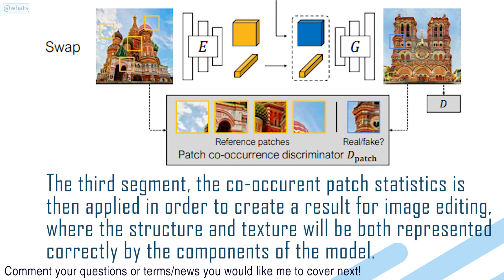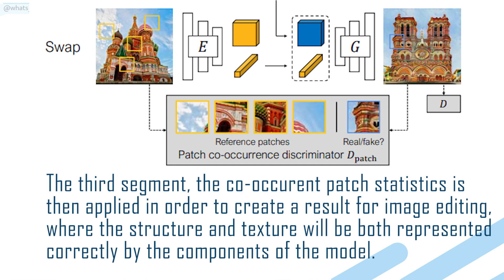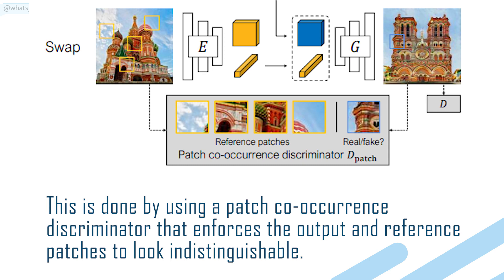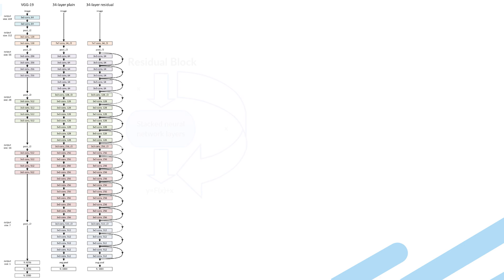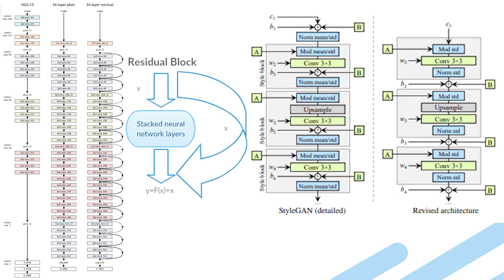The third component, the co-occurrence patch statistics, is then applied in order to create a result for image editing, where the structure and texture will both be represented correctly by the components of the model. This is done by using a patch co-occurrence discriminator that enforces the output and reference patches to look indistinguishable.